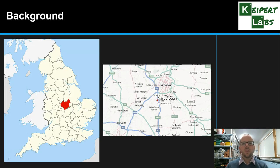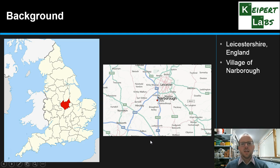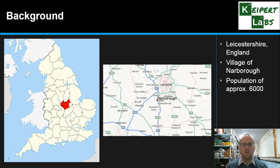This is not an Australian case — this is in the UK. We're looking at the county of Leicestershire in England, shown here in red, kind of around about the centre of the UK, in a village called Narborough. Here on this smaller map is Leicester, and then it's this village just some distance outside called Narborough. The population was approximately 6,000 people at this point in time, in the early 80s.